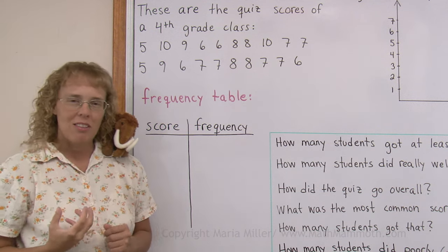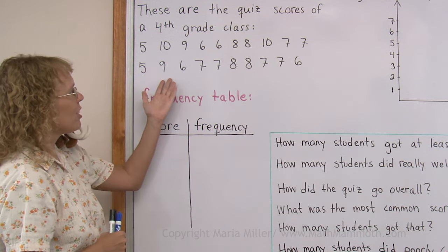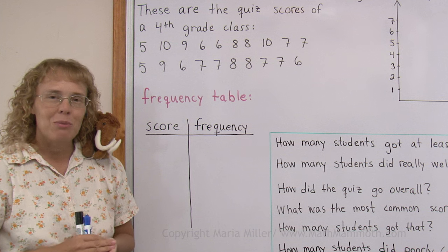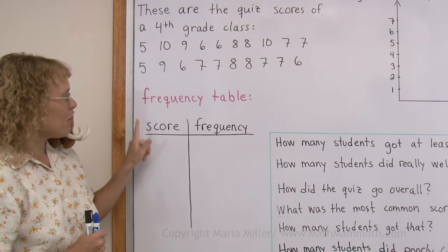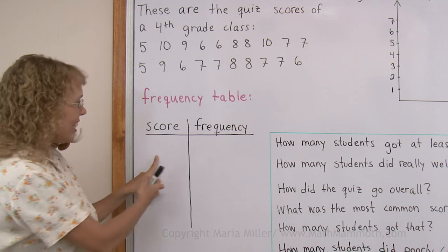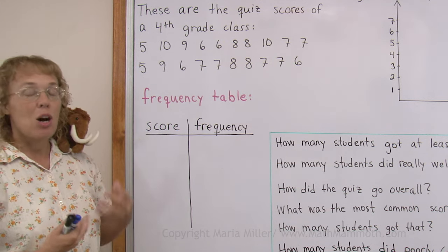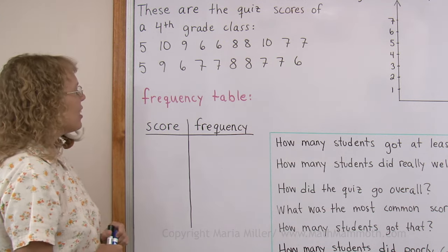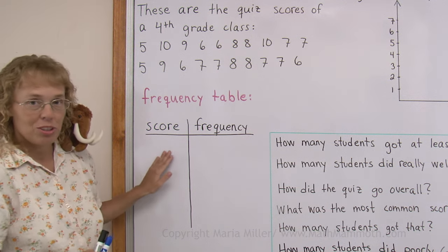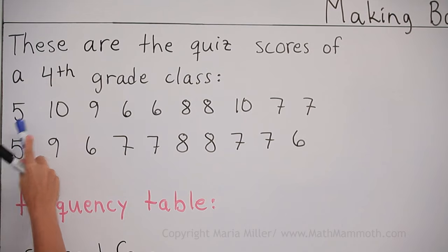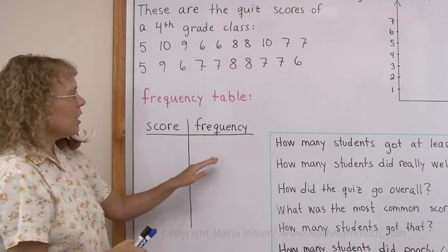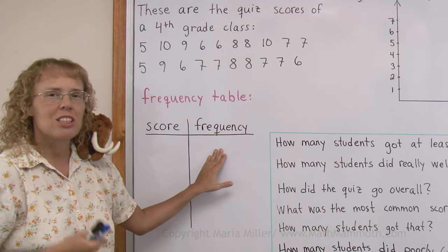And so we want to make a bar graph out of this information here. We have to start out by making something called a frequency table. I'm going to make it here. I'm going to fill it in here. Frequency means how often. Scores are the possible scores in the quiz, such as five points, six points and so on. And how often or how many students got that?